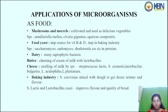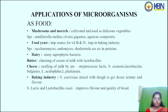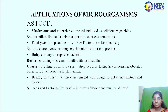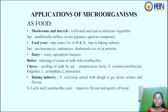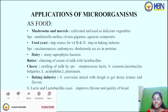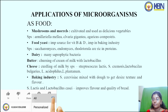Applications of microorganisms — as food: mushrooms and morels are cultivated and used as delicious vegetables, with species like Agaricus campestris. Food yeast is an important source of vitamins B and D and is very important in the baking industry. Species such as Saccharomyces, Endomyces, and Rhodotorula are rich in proteins.